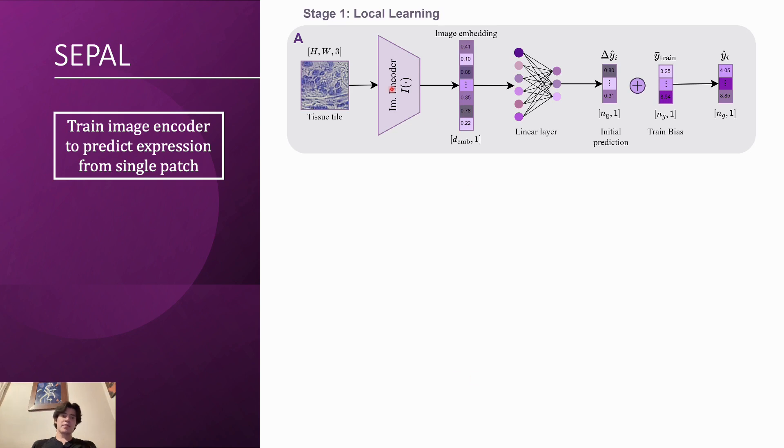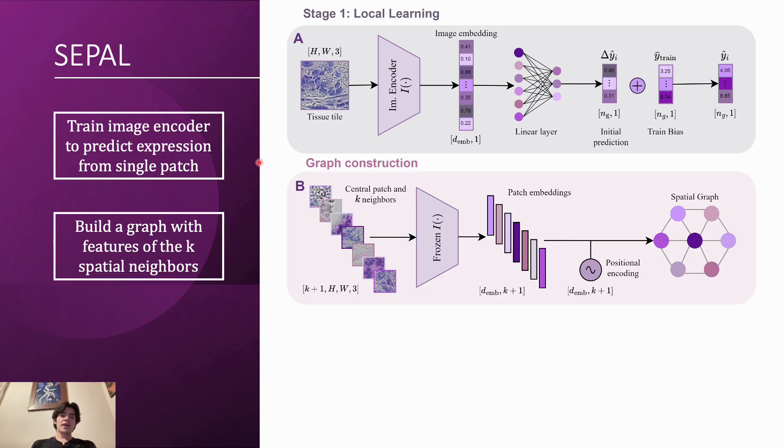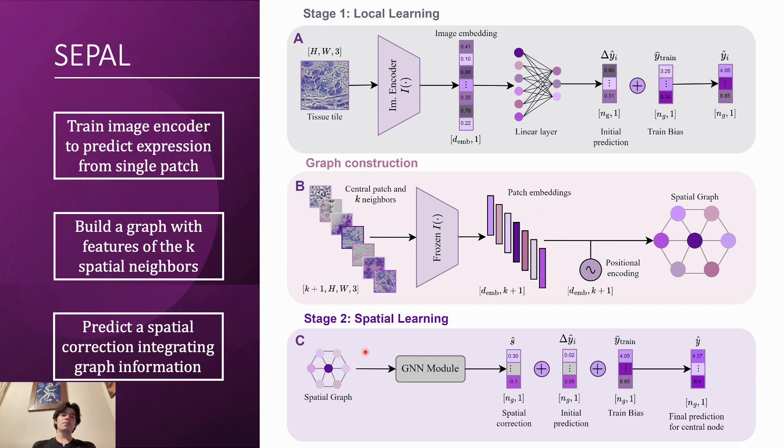So for SEPAL, the method is fairly simple. For example, we basically first train an image encoder that makes a completely local prediction, then we build a graph with the spatial neighbors of that patch and finally we use the graph and we preprocess the graph with a graph neural network module that predicts a spatial correction to the initial prediction.